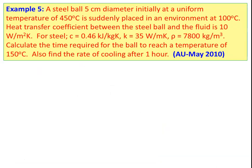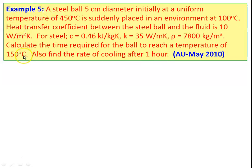We take example number 5: a steel ball of 5 centimeter diameter, initially at a uniform temperature of 450 degree Celsius, is suddenly placed in an environment at 100 degree Celsius. The heat transfer coefficient between the steel ball and the fluid is 10 watts per meter square kelvin. For steel, C equals 0.46 kilojoules per kilogram kelvin, thermal conductivity 35 watts per meter kelvin, density 7800 kilograms per meter cube. Calculate the time required for the ball to reach 150 degree Celsius. Also find the rate of cooling after one hour. There are two parts to this problem.